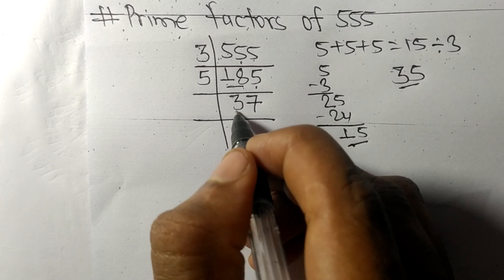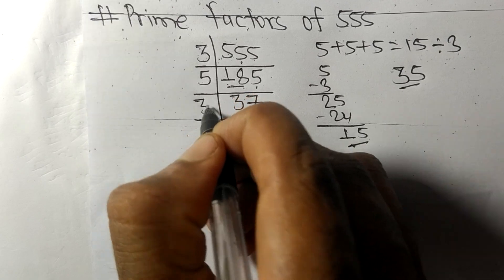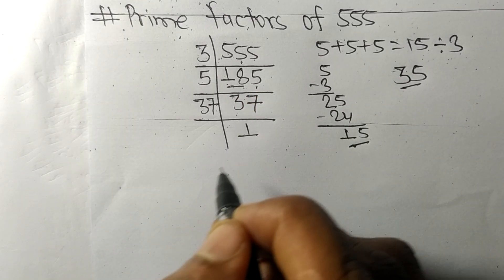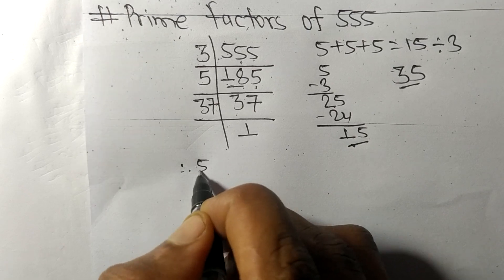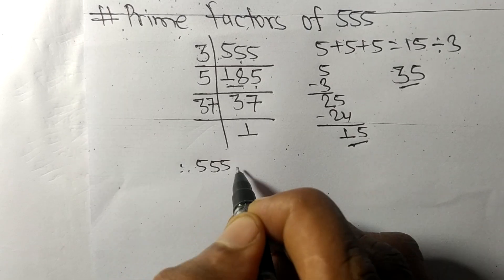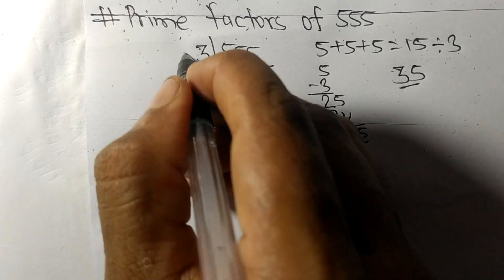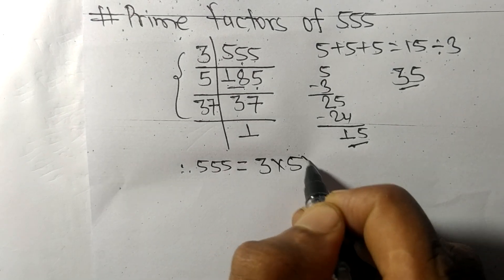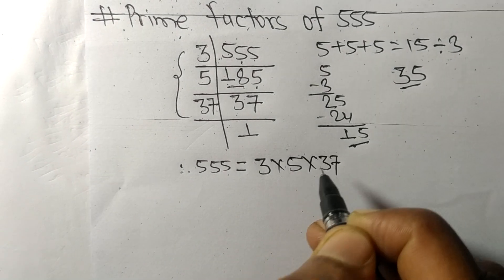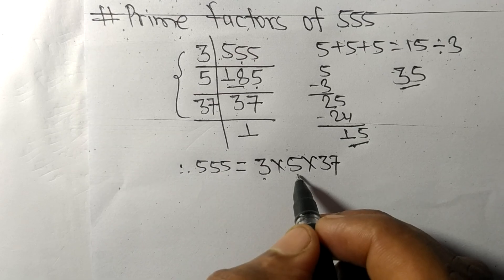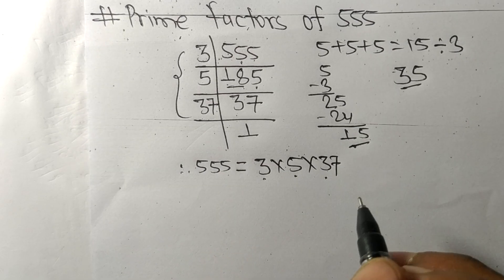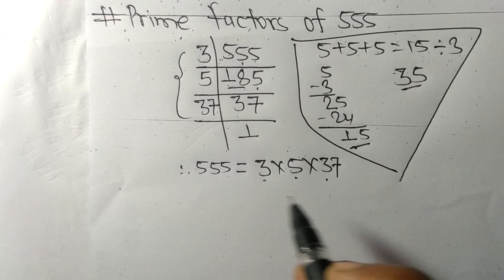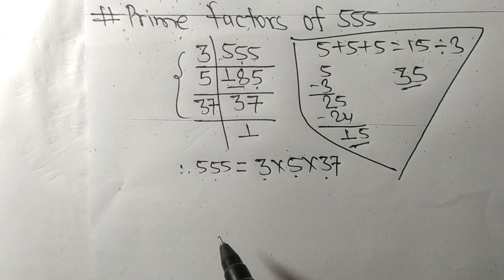37 is divisible by 37 itself and we get 1. Therefore, 555 is equal to 3 times 5 times 37. So 3, 5, and 37 are the prime factors of 555.